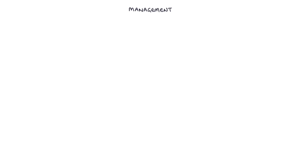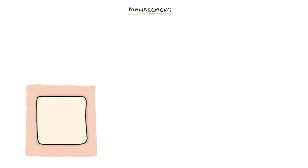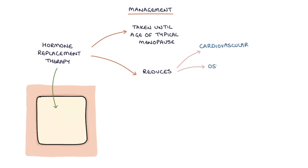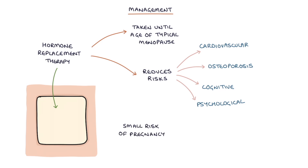So how is it managed? Management involves hormonal replacement therapy or HRT, which should be taken until at least the age at which women are typically expected to go through the menopause. HRT reduces the cardiovascular, osteoporosis, cognitive, and psychological risks associated with premature menopause. It's worth noting there's still a small risk of pregnancy in women who have premature ovarian failure, so they still require contraception.